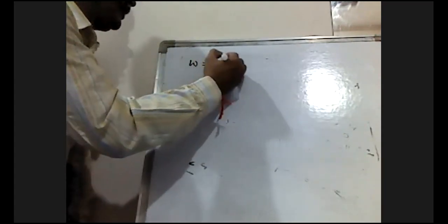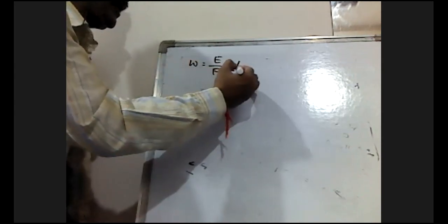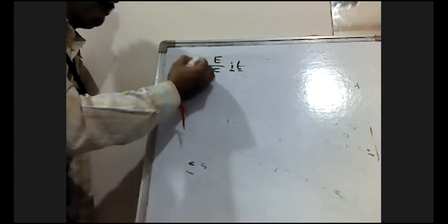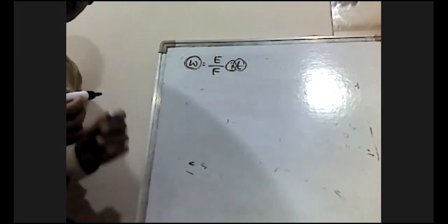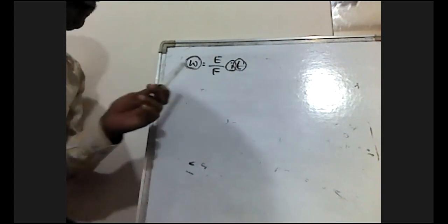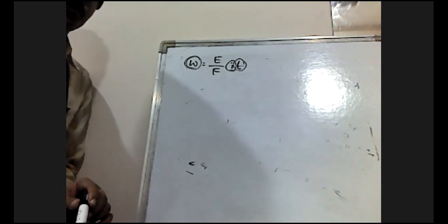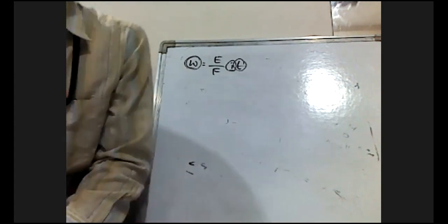Observing the Faraday's first law equation W = (E/F) × I × T, there are four parameters. In this problem, I and T were given and W was asked. In other problems, the amount of substance deposited may be given and you may be asked to calculate either the current or the time needed to deposit a certain mass of substance.